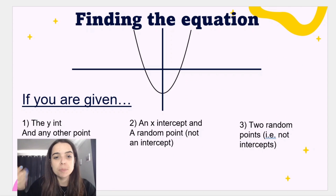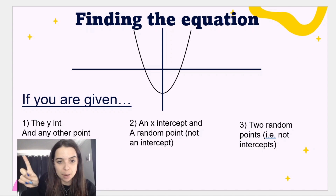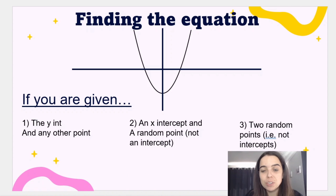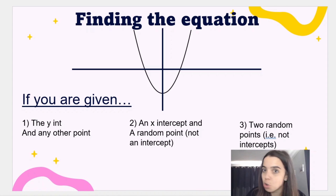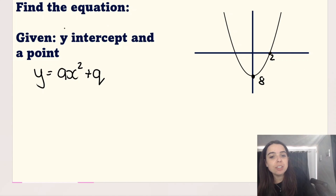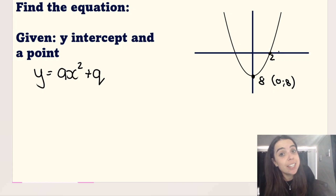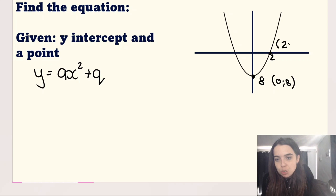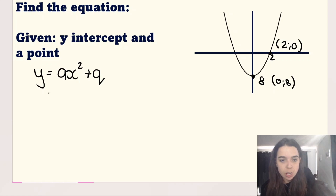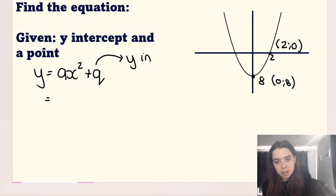In example one, they give you the y-intercept and another point. Example two will be they give you the x-intercept and a random point, not an intercept. And example three will be they give you two random points, not intercepts. So let's start with example number one. In this example, we are given a y-intercept of 0 and negative 8, and we're given another point. In this case our other point is 2 and 0. We know that our q is our y-intercept — where the graph cuts the y-axis — and in this case it is negative 8.